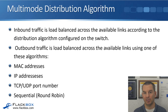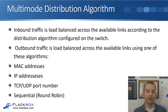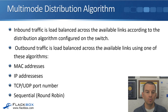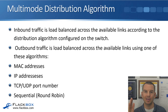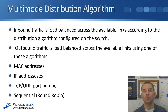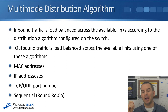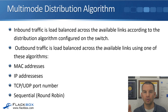You want all packets from a single flow — meaning from a particular client to a particular server — to go over the same path. The distribution algorithms that support this are by MAC address, by IP address, or by TCP or UDP port number. Choose the algorithm that gives the most even spread of traffic across all links. For example, if most traffic goes to one IP address, IP-based load balancing won't spread evenly; using port number might give a better distribution.